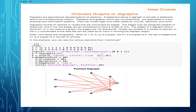Digraphs consist of vertices or nodes that are connected by edges. The edges may be assigned weights or distances, and if not, the edges are considered to have the weight of one. The edges of a digraph have direction, or in the case of a graph, the edges are not directional. Nodes are plotted in a variety of layouts, or the XY coordinates of a data set can be used as input in forming the graph object.